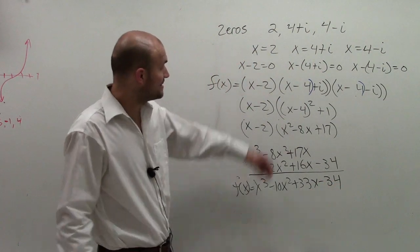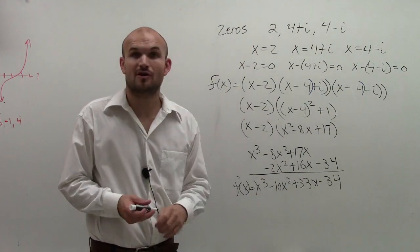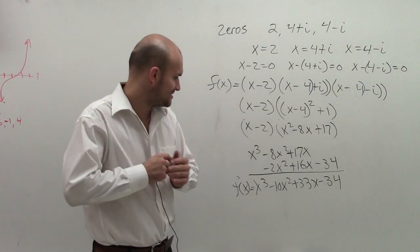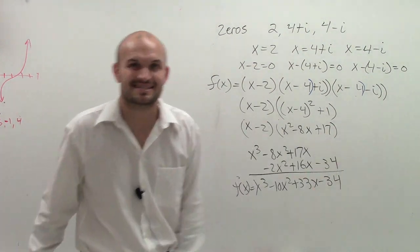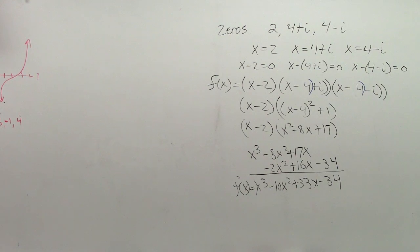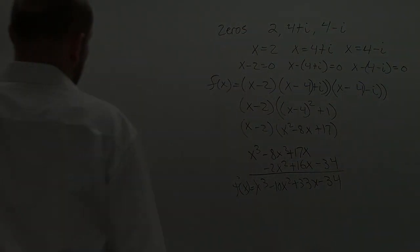So there you go, ladies and gentlemen. There's my two zeros with my given function: f of x equals x cubed minus 10x squared plus 33x minus 34. Voila. Thanks. All right, thanks for that. We'll see you soon.